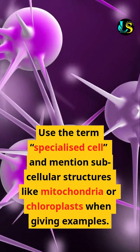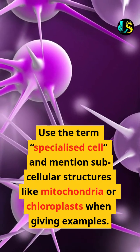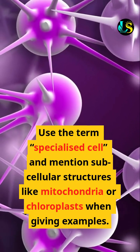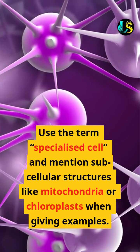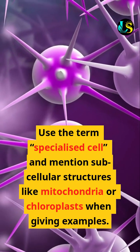Exam tip: use the term 'specialized cell' and mention subcellular structures like mitochondria or chloroplasts when giving examples.